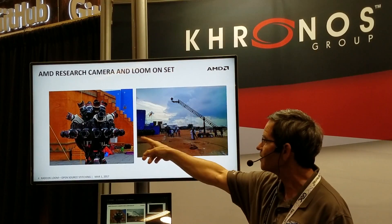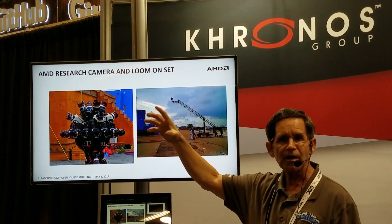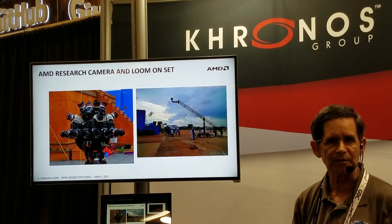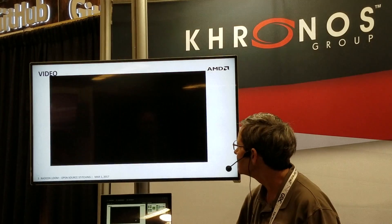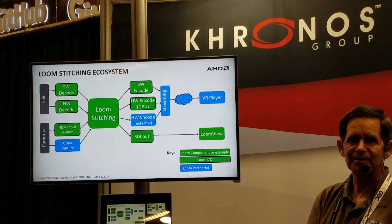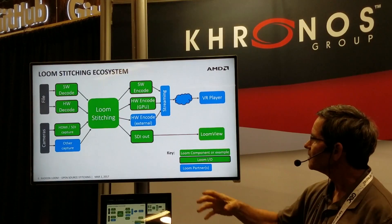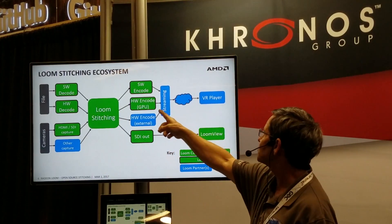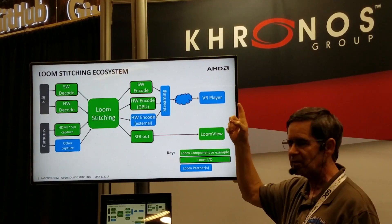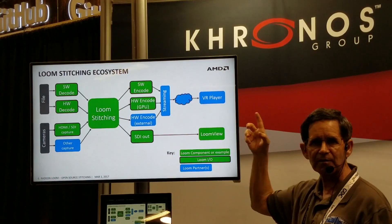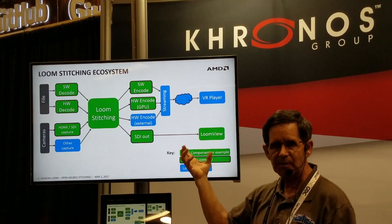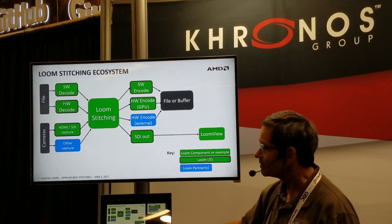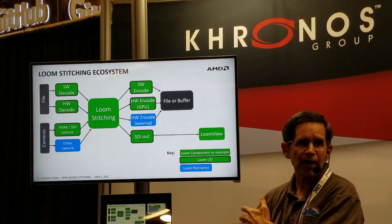With this camera, we can take the images through the SDI interface, capture them into a PC, and real-time preview it in a headset so the director of the movie, while they're filming, can actually see what's going on. So this is an example of what the overall block diagram might look like. You have either a file or cameras coming in, going into the Loom stitching modules, and then you can stream it to the cloud, to a headset, or go SDI out to another PC and have a local headset. Somebody can be previewing what's going out live over the internet. Alternatively, you can just record it to a file for later processing.